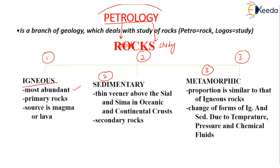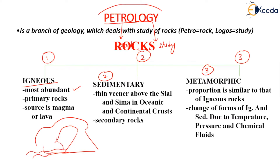Igneous rock is also known as a primary rock. The main source of the igneous rock is magma or lava. When there is a volcanic eruption, there may be eruption of magma or lava, and due to the solidification of these materials, igneous rocks are formed. These are the underlying rocks. Coming to sedimentary rocks, these are thin veneers above the sima, with limitations in the oceanic and also the continental crusts.